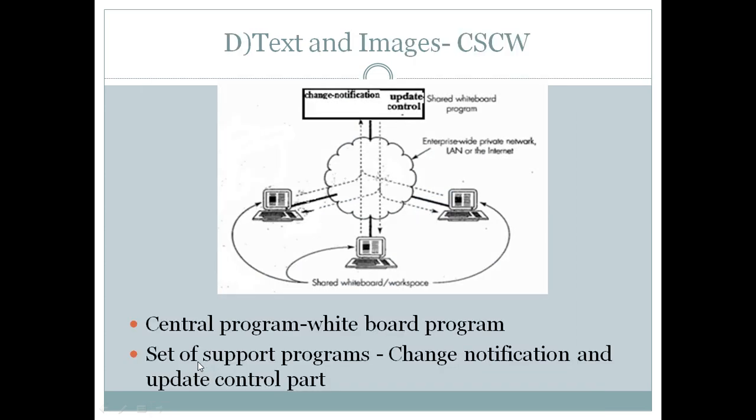And next we have the next application where we have text and images. That is, this actually comes into multimedia where we are combining two different media terms such as text and image. And one of the applications that involves both text and images is CSCW, that is computer supported cooperative working. So in this computer supported cooperative working, you will have a network here, and to the network there are many computers that are connected, and all the computers will have a screen that is called as a shared whiteboard. So whatever the changes you make on the shared whiteboard here, it will be moved on to the change notification section. And when the change is indicated, this update control part will update that change in all the other systems that are connected here.